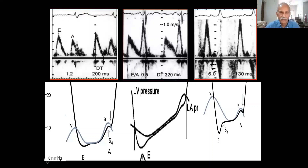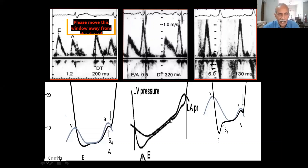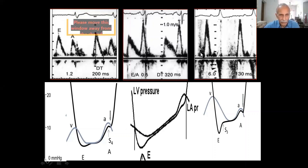Eventually, LA pressure goes up. In the advanced stage, there is rapid deceleration — this is restrictive filling — and hardly any flow with atrial contraction because the atrium has become diseased. So from normal to abnormal, looking at the mitral inflow morphology, we are able to recognize what disease process is affecting the heart. That is the beauty of the Doppler.